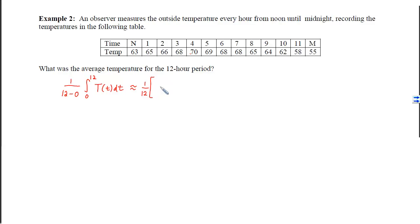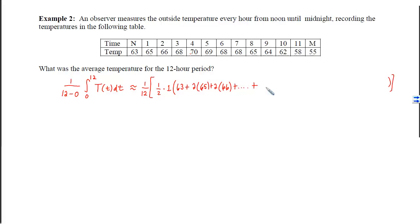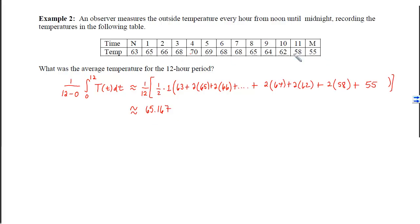To estimate that accumulation we do the trapezoidal rule: one half times delta x. We check to see if delta x is the same for every subinterval — it is — so we can factor it out and look at the overall sum: the first height is 63, then two of all the interior heights, continuing with two of each until the last one, which is used just once. Plugging that into our calculators, we get approximately 65.167, which makes sense because the average temperature should be somewhere in the range of the given temperature values.